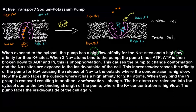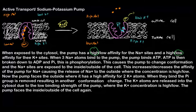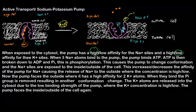When three sodium atoms bind to the pump, the pump binds ATP. Once three sodiums have been attracted and bound to the sodium-potassium pump, the pump now has an affinity for ATP — the binding of sodium creates the affinity for ATP. ATP is then broken down to ADP and inorganic phosphate, and this is the phosphorylation. Breaking ATP into ADP and inorganic phosphate is where we use it for energy.